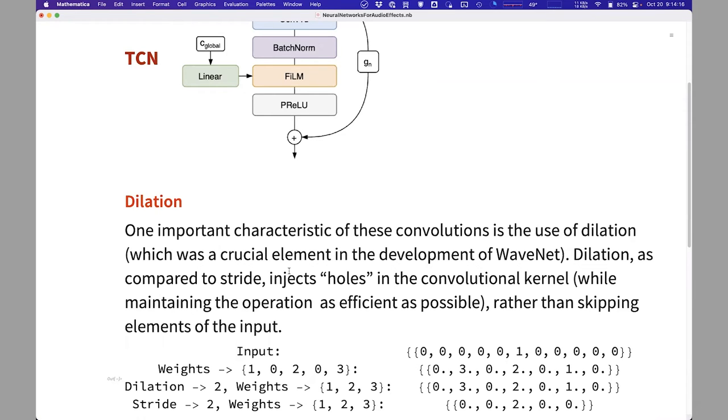These audio operations usually have a memory of the past and they need to take into consideration what happened in the past. In general, a good estimate for dynamic range compression is that you want a receptive field of a hundred, a few hundred milliseconds.